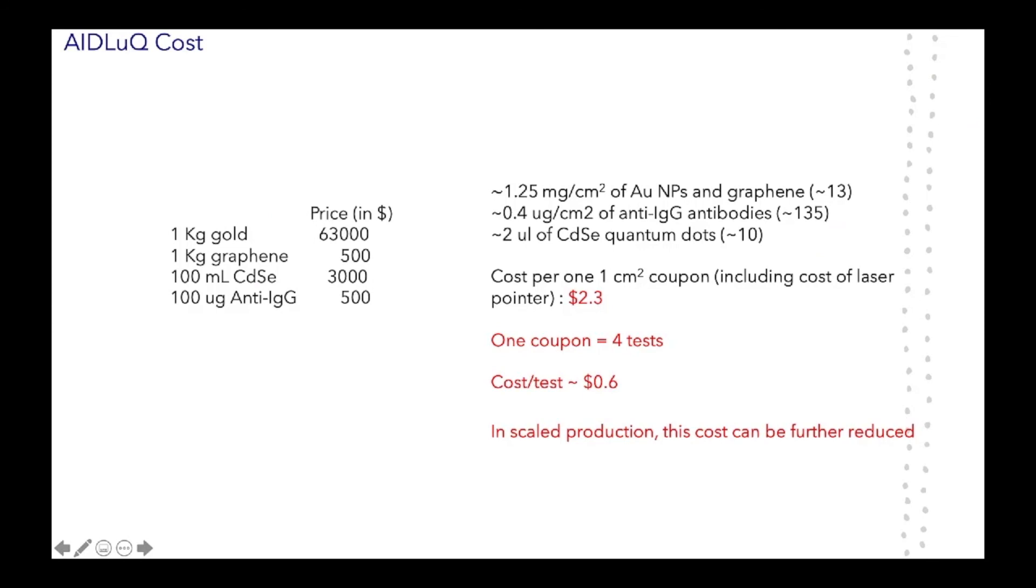How about the cost of production? Here, we show the values of price for gold, graphene, quantum dots, and the IgG antibodies. Based on these costs, we are able to estimate that the cost of one 1cm² coupon with anti-IgG antibodies, including the cost of laser pointer, is around 2.5 dollars. One coupon can give you 4 tests. So, cost per test is effectively just under a dollar, around 0.6 dollars. Note that these prices are based on just kilogram quantities, but if produced in bulk, in a scaled-up process, this cost can be further reduced. This kind of a smartphone sensor for detecting COVID antibodies would be very helpful in distributing the vaccine.